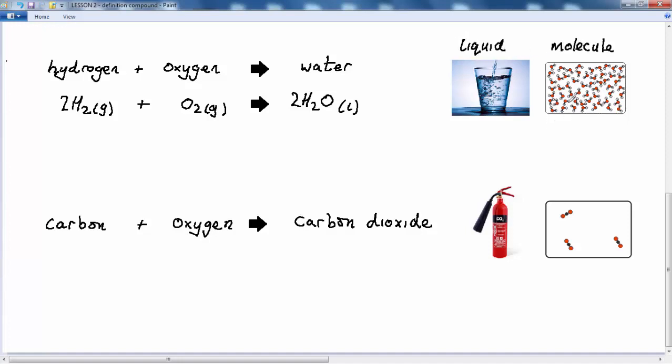In this case, the atoms in the molecule are joined in a fixed ratio. In the water molecule, for every atom of oxygen there are two atoms of hydrogen. Likewise, compounds can also be gases. Carbon dioxide is a molecule and a compound in which the atoms are joined in a fixed ratio. Every atom of carbon is chemically joined to two atoms of oxygen.